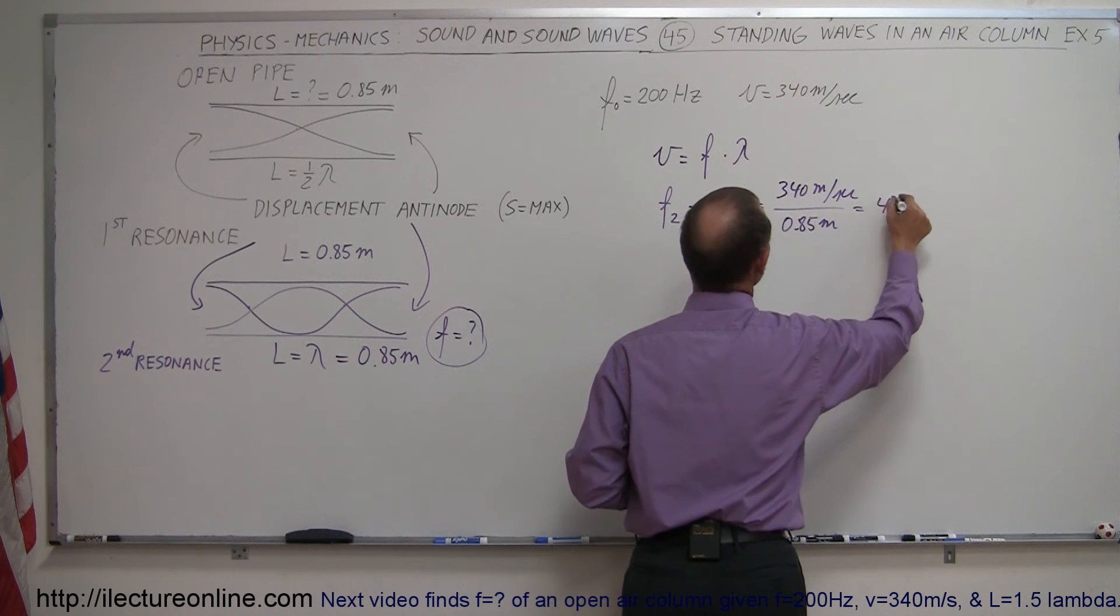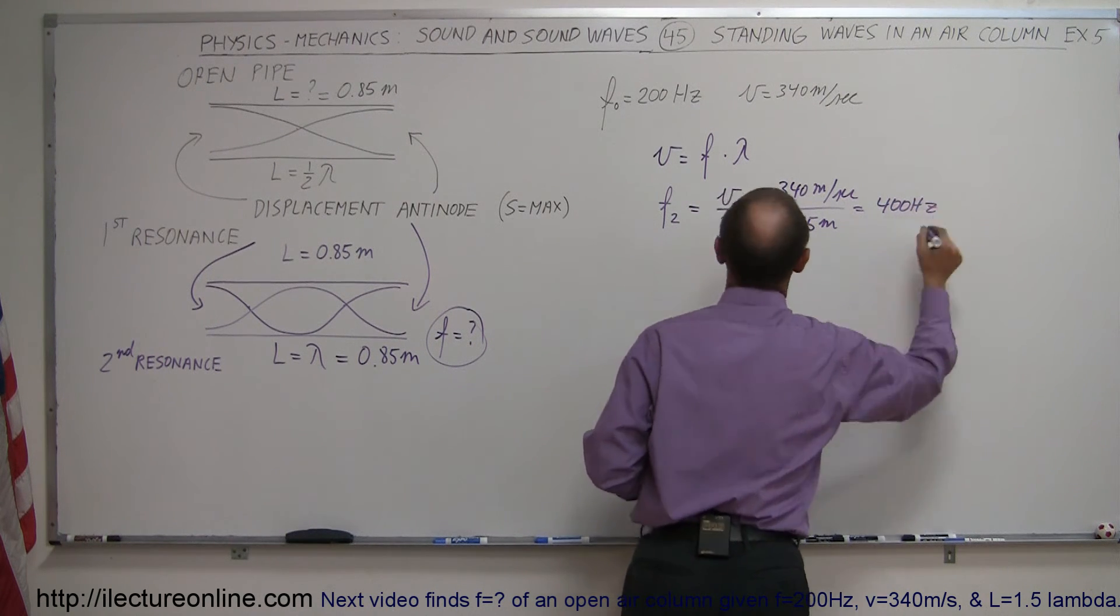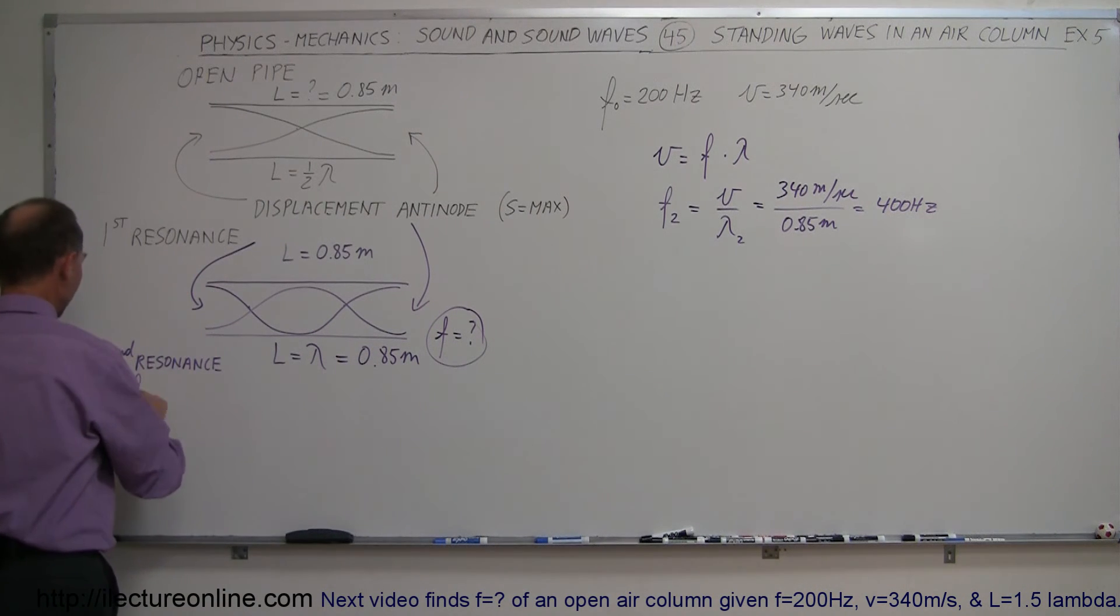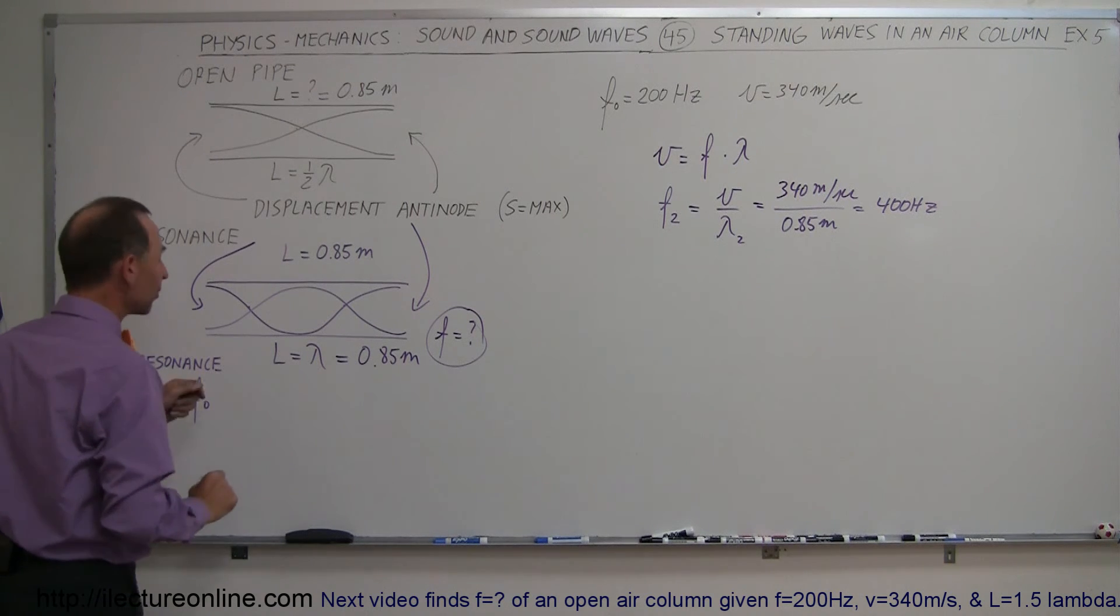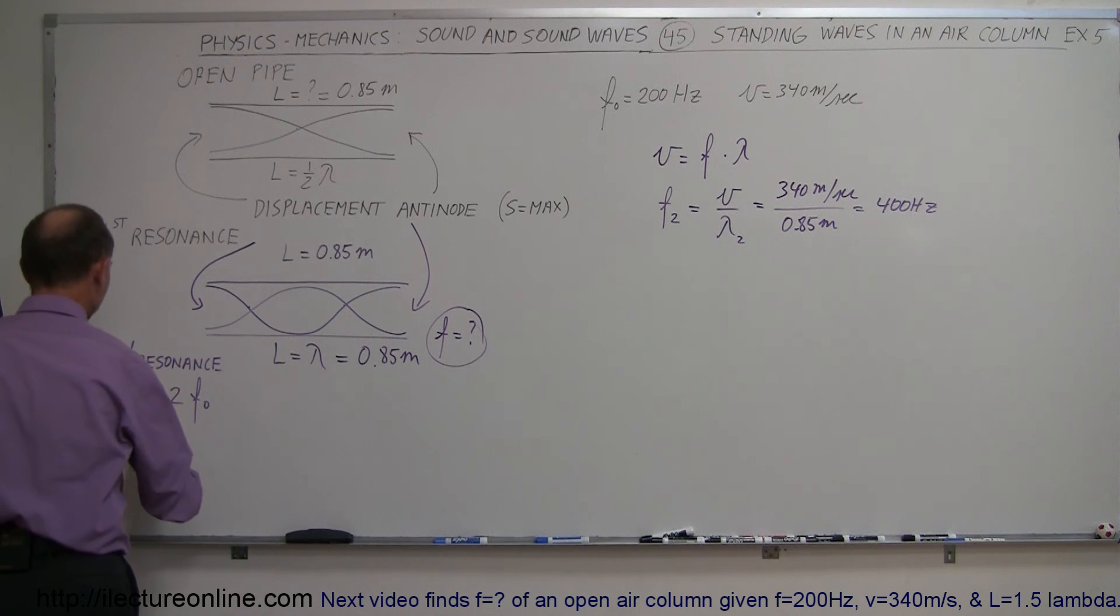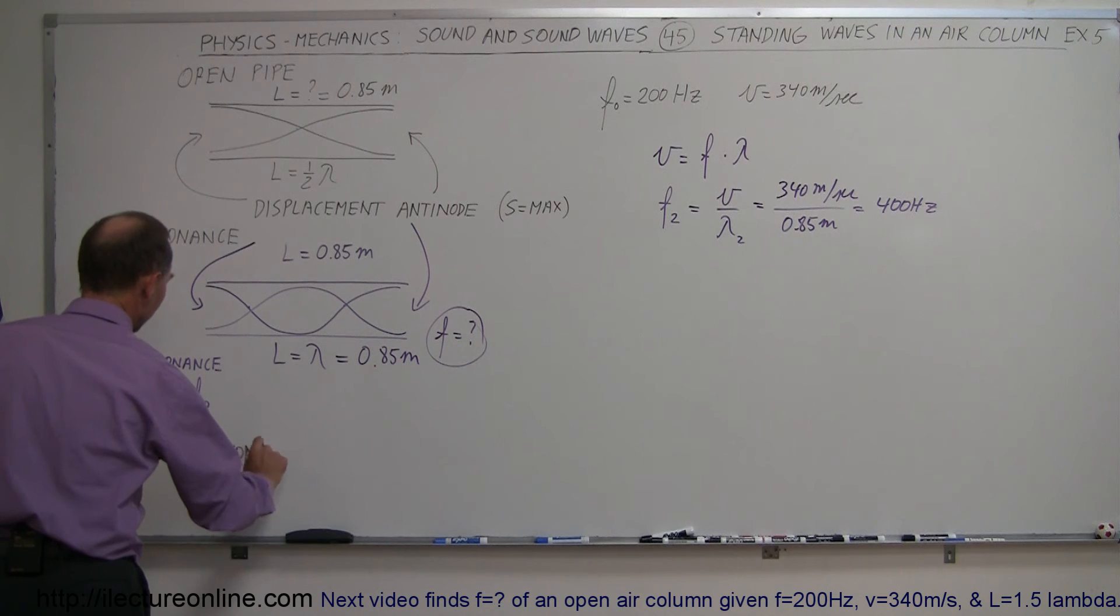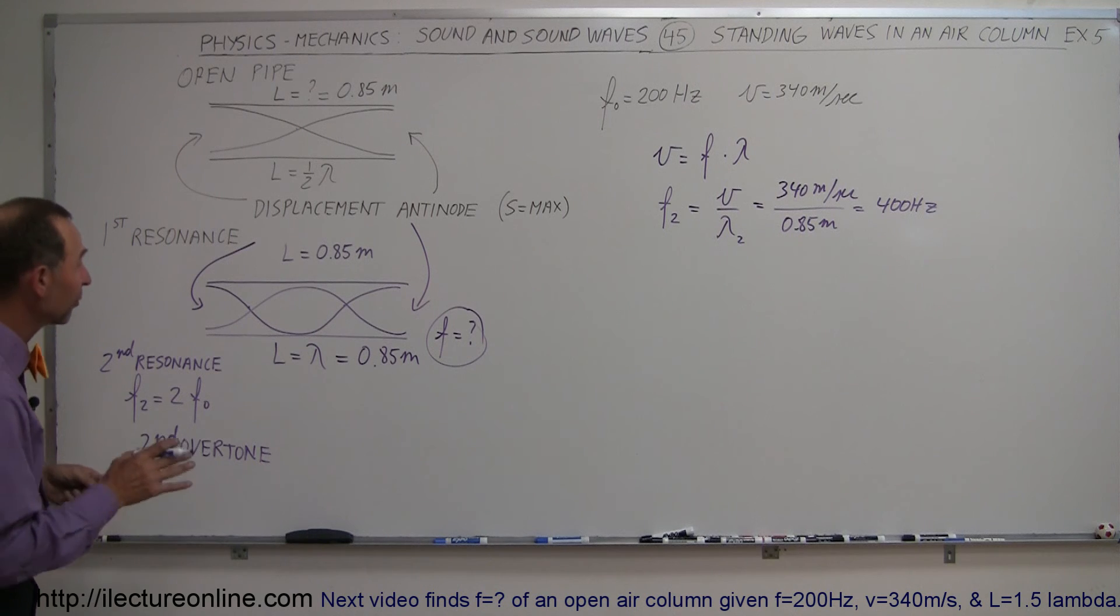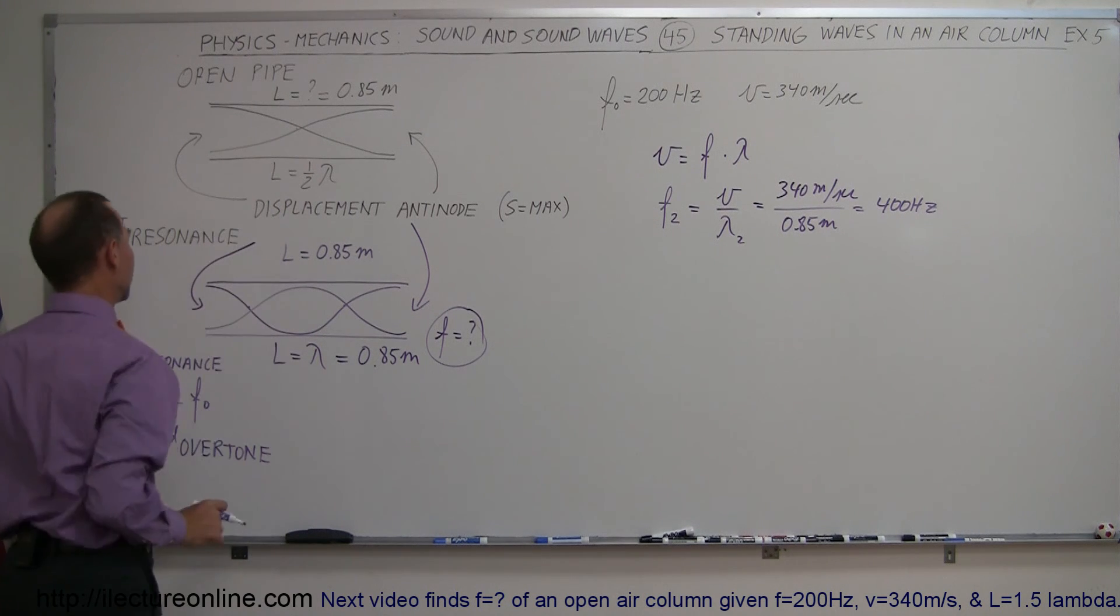And that's going to be exactly equal to 400 Hz, which means that the second resonance, frequency of the second resonance, is twice the frequency of the base resonance, or the fundamental frequency. That means we have a second overtone situation here. This means that the resonance frequency of this situation is twice the frequency of the resonance of this situation.